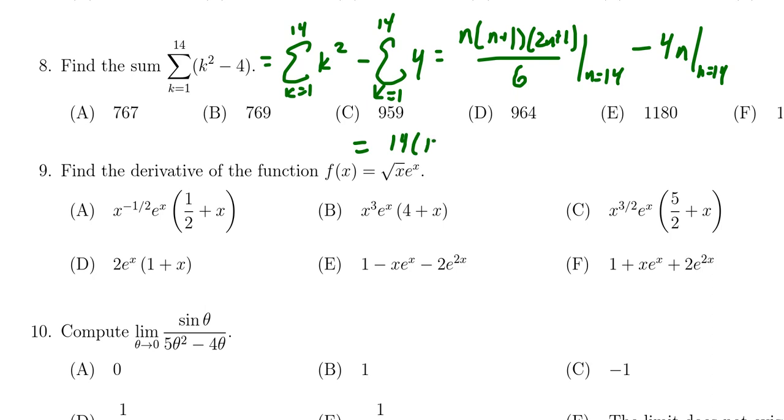So plugging these values into the formulas that we have here, we're gonna have 14 times 15 times 29 over 6, and then we're going to subtract 4 times 14.